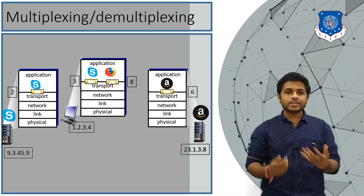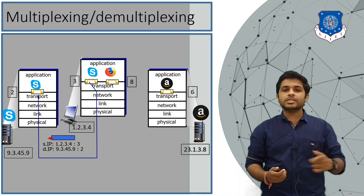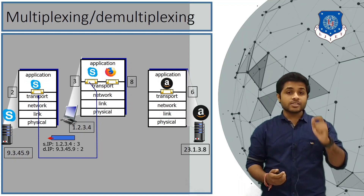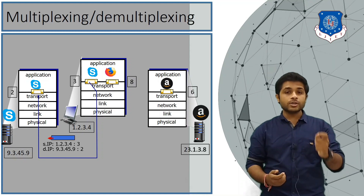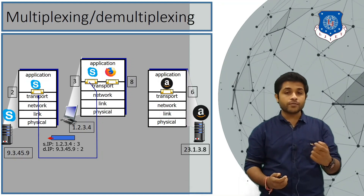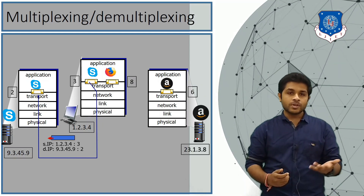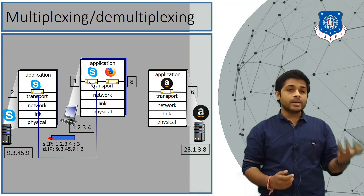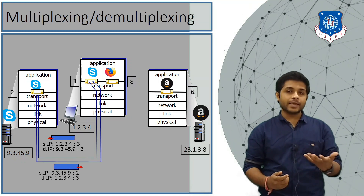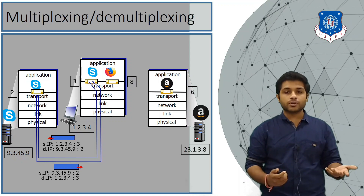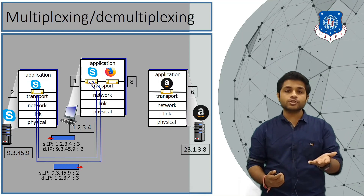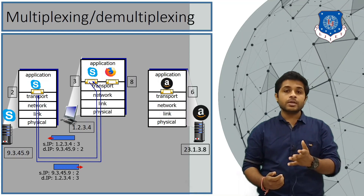When you type a message and press Enter, the message is sent from your device to the Skype server with the port address attached to the IP address. The source IP is 1.2.3.4 with source port 3; the destination IP is 9.3.45.9 with destination port 2. When the Skype server replies, it knows which port to reply to. The reply from the Skype server has source IP 9.3.45.9 port 2 and destination IP 1.2.3.4 port 3.